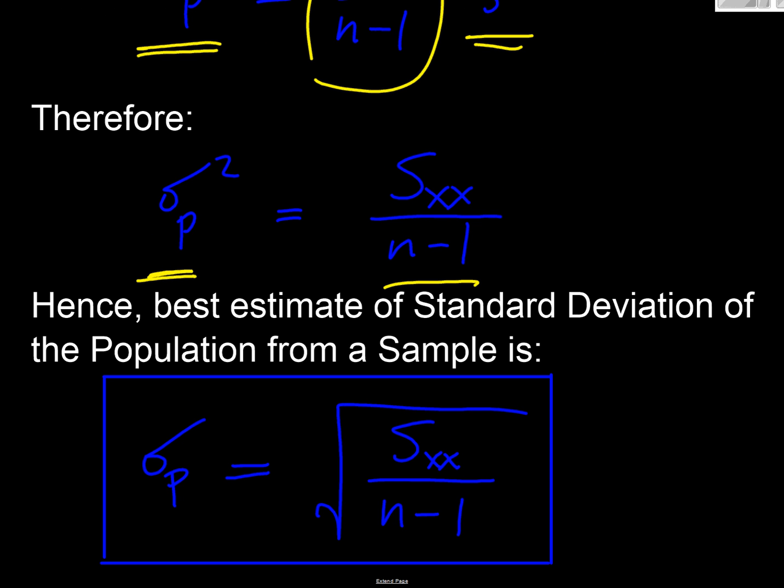Therefore our best estimate of our population variance is going to be the sum of squares divided by n minus 1 rather than divided by n, and therefore our population standard deviation sigma P is going to equal our sum of the squares divided by n minus 1, all square rooted. It's a long journey but that's why we get to n minus 1.